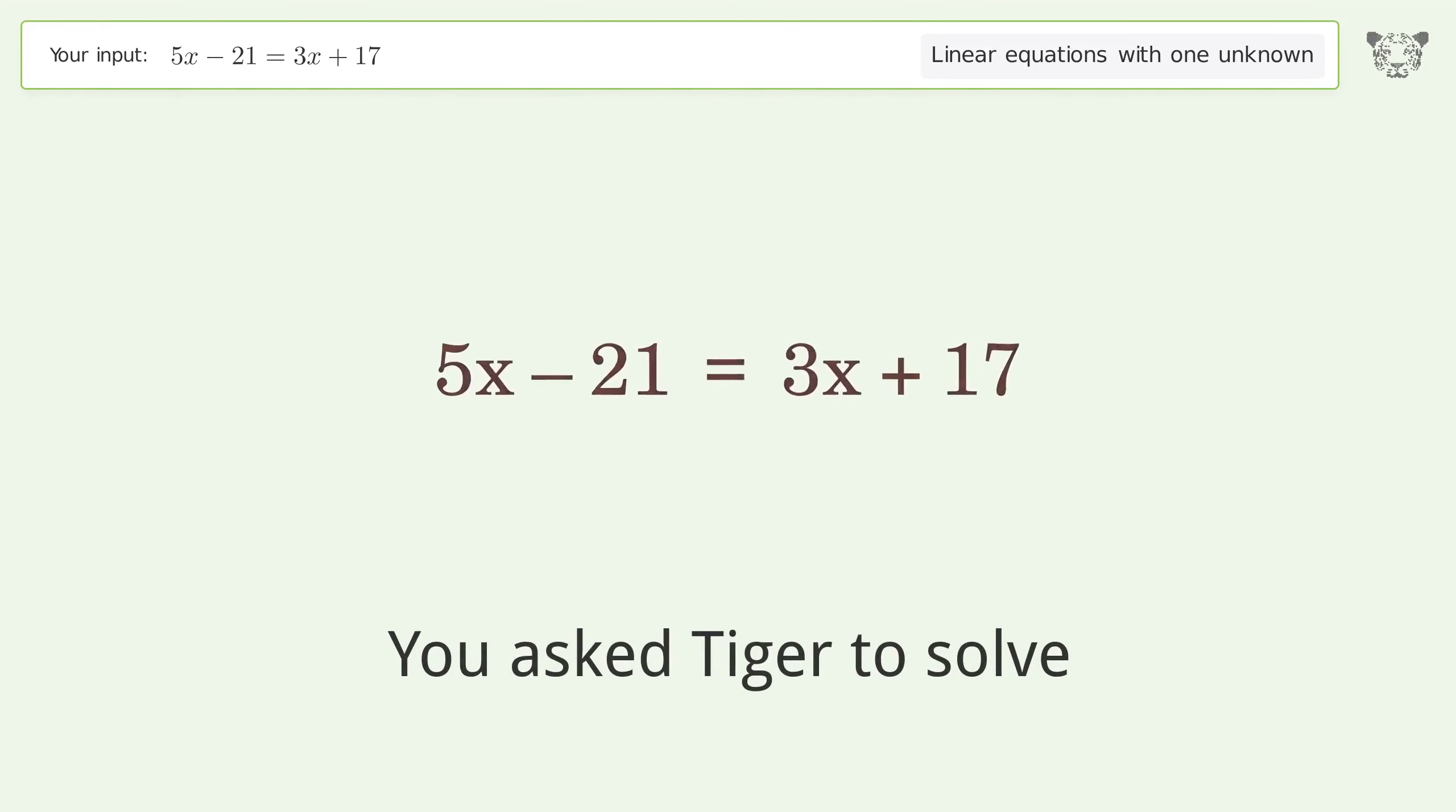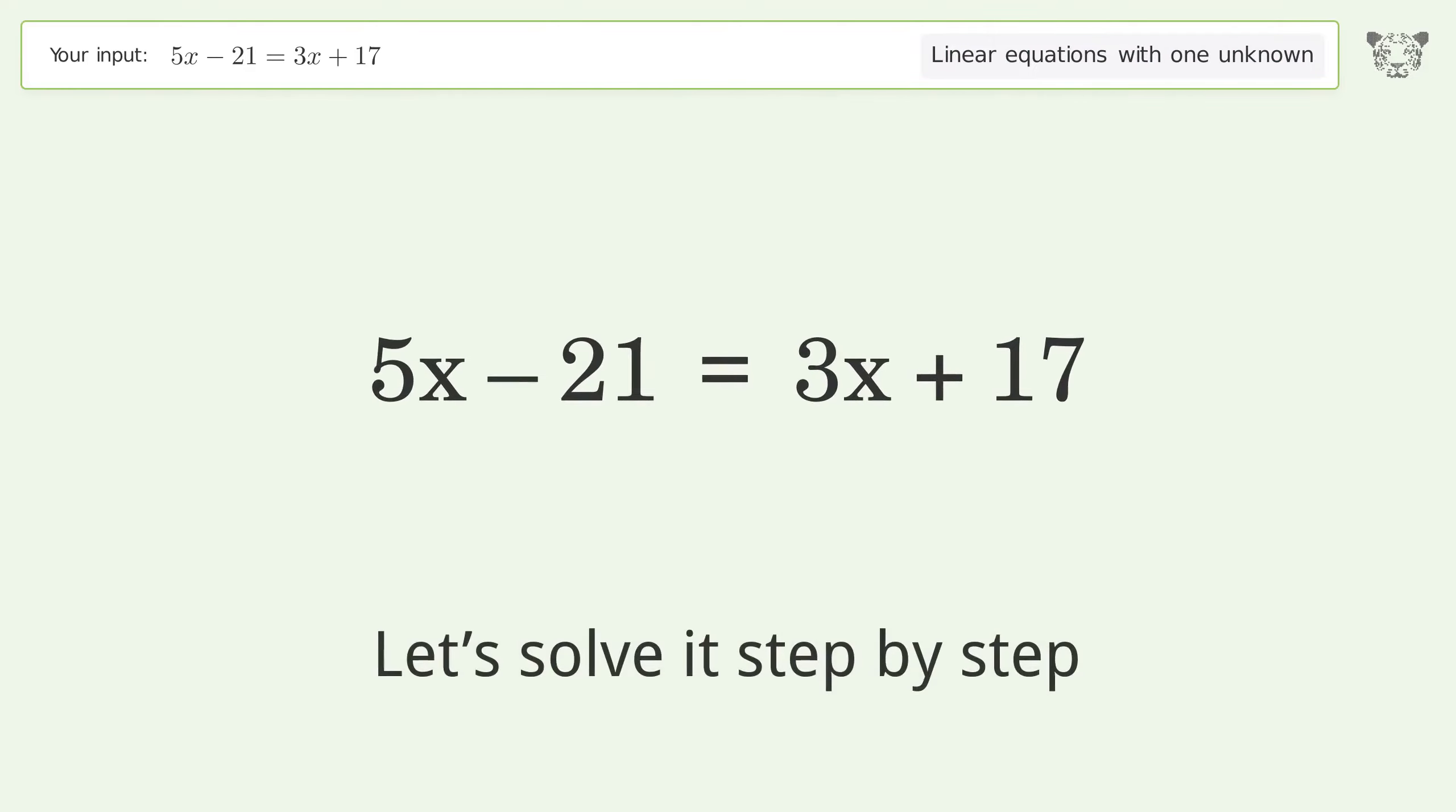You asked Tiger to solve. This deals with linear equations with one unknown. The final result is x equals 19. Let's solve it step by step.